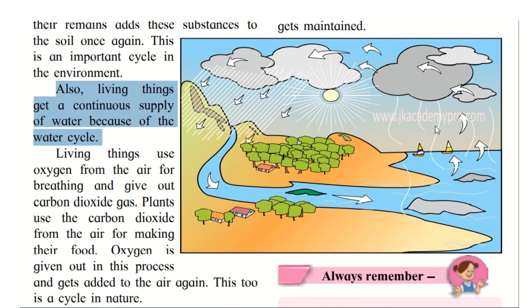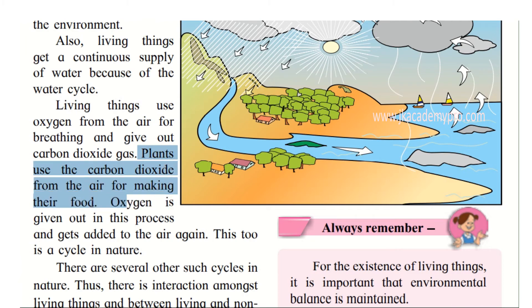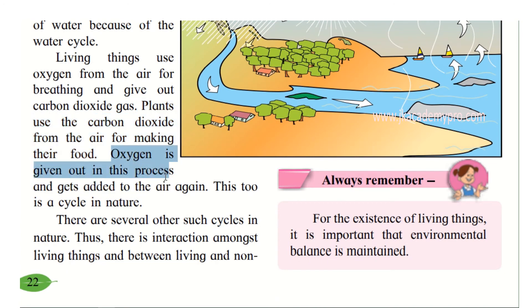Just like the nutrient cycle, the water cycle keeps going again and again. There is also the oxygen-carbon dioxide cycle: living things use oxygen from the air for breathing and give out carbon dioxide, while plants use carbon dioxide for making their food and give out oxygen. This give-and-take relationship keeps going on, and oxygen gets added to the air again — this too is a cycle in nature.